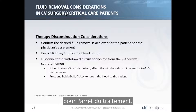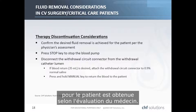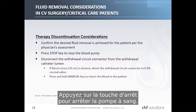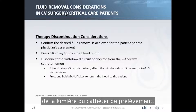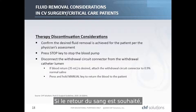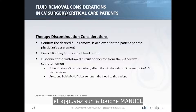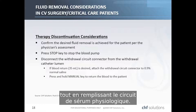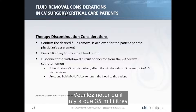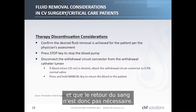For discontinuation of therapy, confirm that the desired fluid removal is achieved per the physician's assessment. Press the stop key to stop the blood pump. Disconnect the withdrawal circuit connector from the withdrawal catheter lumen. If blood return is desired, attach the withdrawal circuit connector to a normal bag of saline and press and hold the manual key to return blood to the patient while filling the circuit with saline. Note that there are only 35 mL in the circuit at any given time, so blood return is not required.